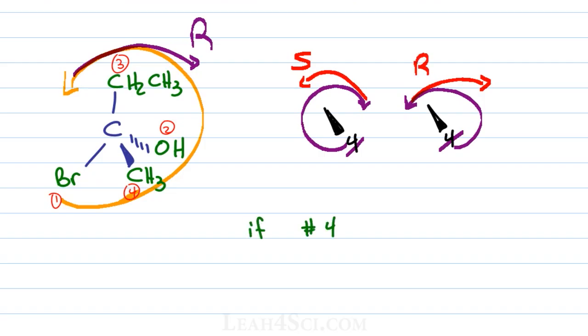So in review, if number four is forward, rank the same way as you did for a standard molecule. Trace an arc from one to two to three and see if it's clockwise or counterclockwise. Then if it's R, turn it into S. And if it's S, turn it into R, because number four forward means that you're showing it to someone else, they see it backwards and they see it in reverse.